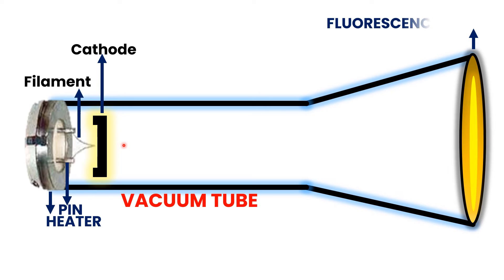The cathode ray tube has a fluorescent screen. Please keep in mind that the fluorescent screen is made up of phosphorus. However, before the phosphorus coating, the fluorescent screen is first coated with zinc oxide, zinc titanate, or zinc sulfide. These are all metals. On top of those metals, phosphorus is painted or a phosphorus coating is applied. This is the composition of the fluorescent screen in a cathode ray tube.